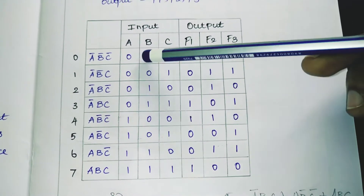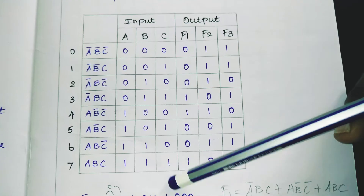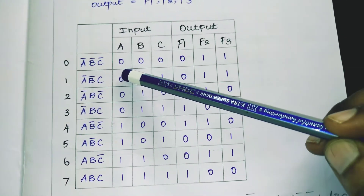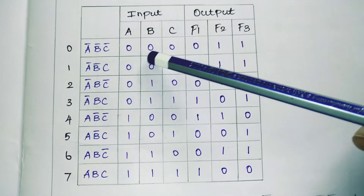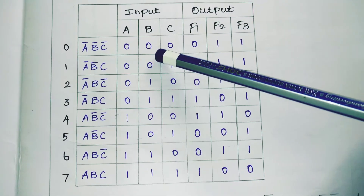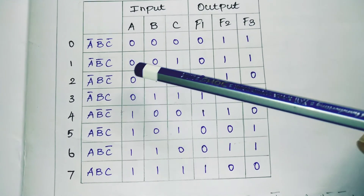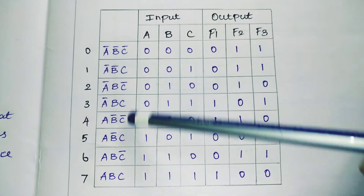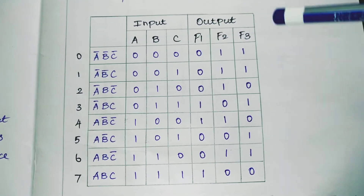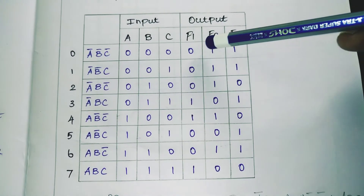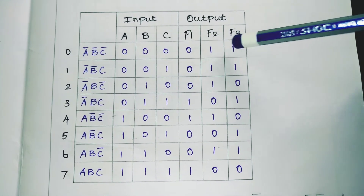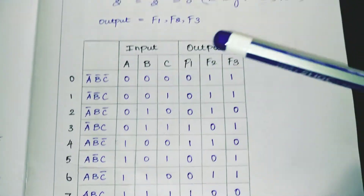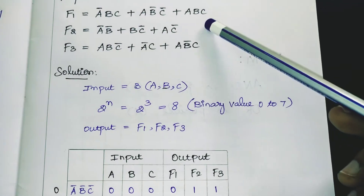Write the binary values from 0 up to 7 in the input columns. For row 0, A=0, B=0, C=0 (i.e., A̅B̅C̅). For row 1, A̅B̅C. For row 2, A̅BC̅, and so on up to 7. Then find the output values for F1, F2, F3 by substituting the respective values of A, B, C into the given expressions.